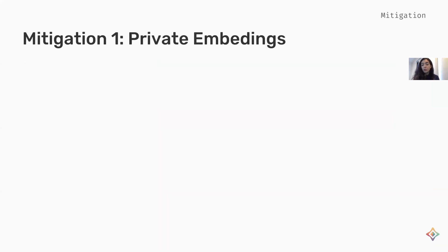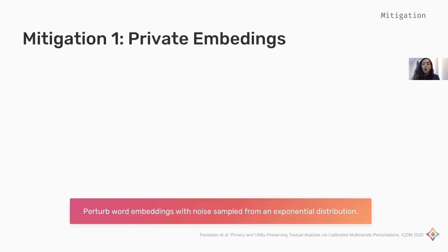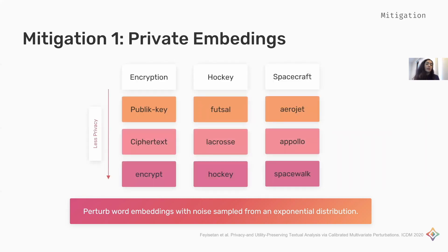The notion of geoindistinguishability is used in recent work in the context of word embeddings. In this work, word embeddings are perturbed with noise sampled from an exponential distribution, calibrated such that perturbed representations are more likely to be words with similar meanings rather than arbitrary words from the vocabulary. For example, for the words 'encryption,' 'hockey,' and 'spacecraft,' the perturbed words at high privacy become 'public key,' 'futsal,' and 'air jet,' and at the lowest privacy, 'encrypt,' 'hockey,' and 'spacewalk.' The perturbations stay within the semantic domain — for encryption, you get security-related words; for hockey, you get other sports. Geoindistinguishability ensures perturbations remain within the desired radius and do not map words to random, unrelated words.